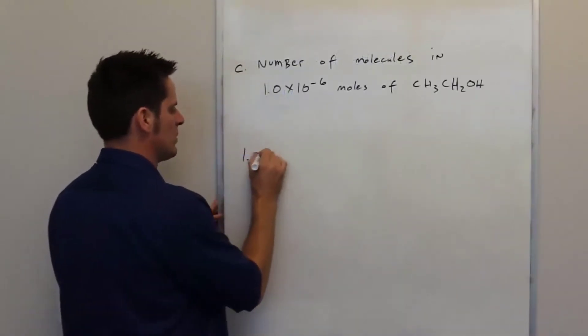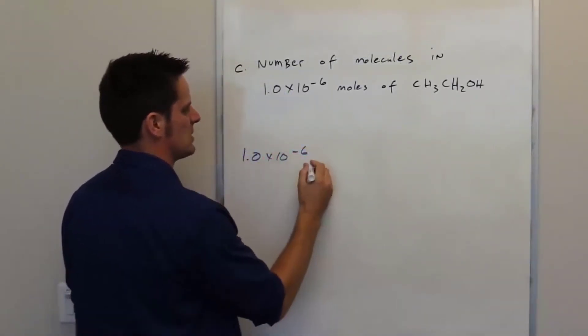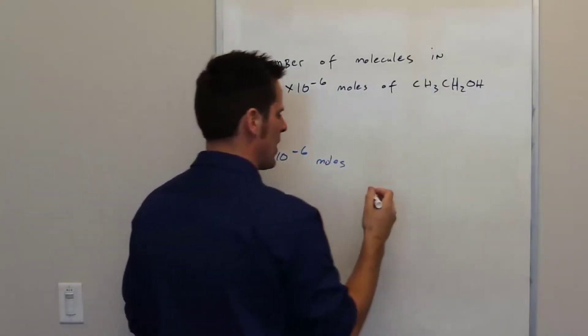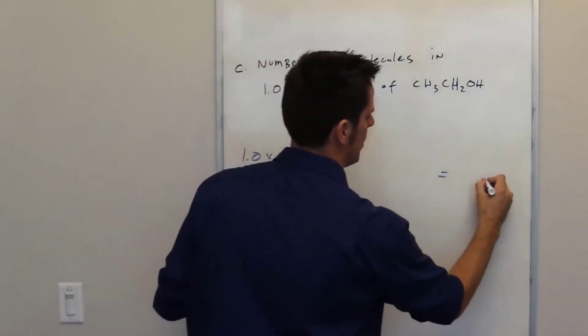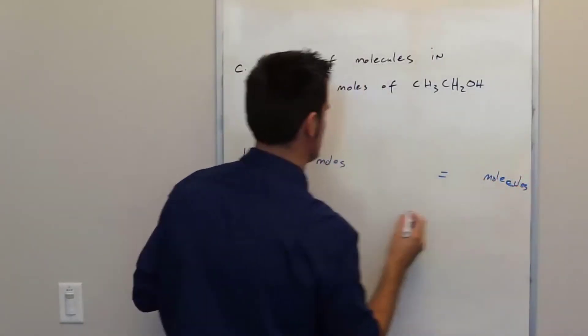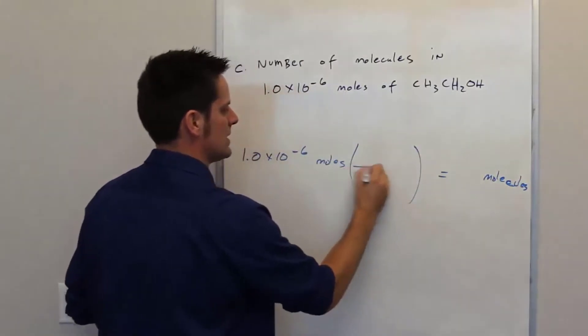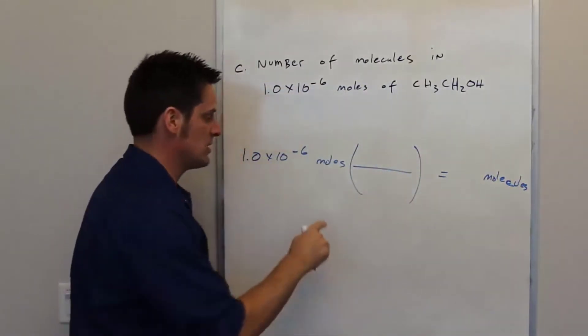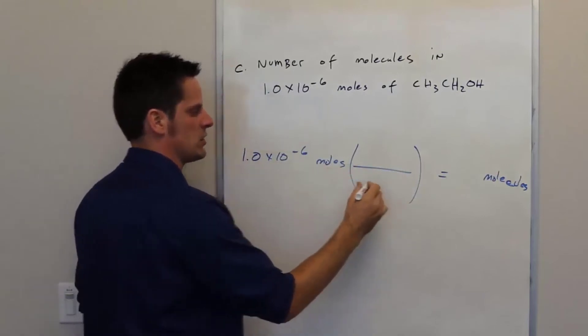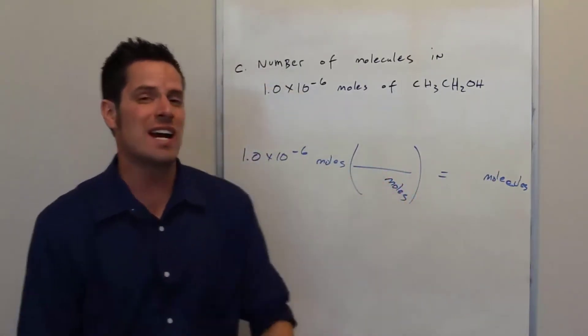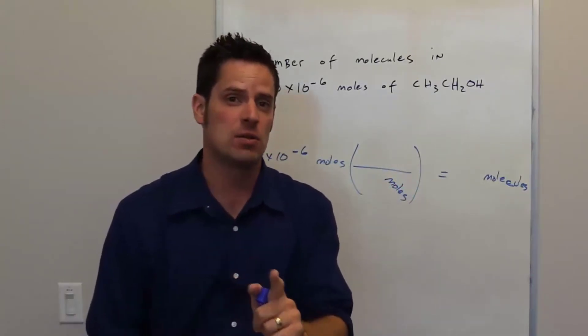Here I've got 1.0 times 10 to the negative sixth moles of this substance, which happens to be ethanol. I'm trying to turn it into molecules. How do I do that? Well, of course, I'm going to use a set of brackets. I'll write units here in the denominator. What will those units be? Well, they have to match the units in the numerator to the left, so it's going to be moles so that they'll cancel each other out.